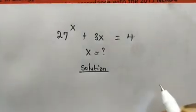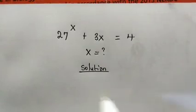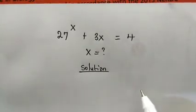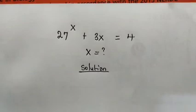Hello, welcome back once again. Today we have this interesting equation: 27 raised to the power of x plus 3x is equal to 4. Our goal is to solve for the value of x. So how can we solve this problem? Now let's get started.